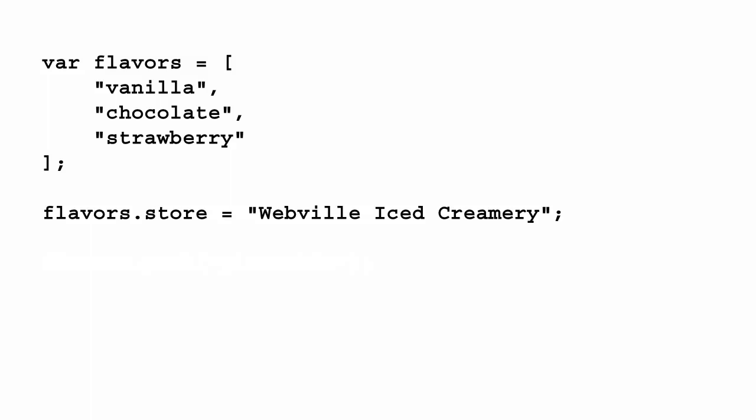Here, we're creating an array of flavors with three items: chocolate, vanilla, and strawberry, and then adding our own property to that array, store, that we set to the string Webville Ice Creamery. Adding this property doesn't affect the length of the array at all. If we check the length of flavors in the console, we see that the length is still three.